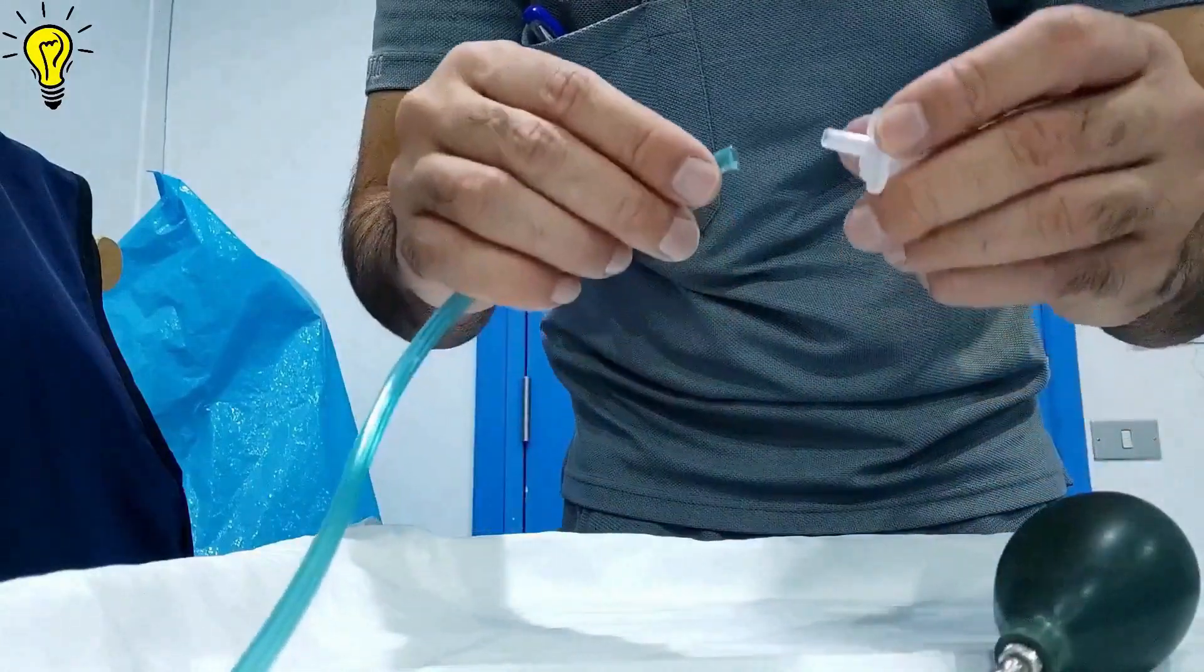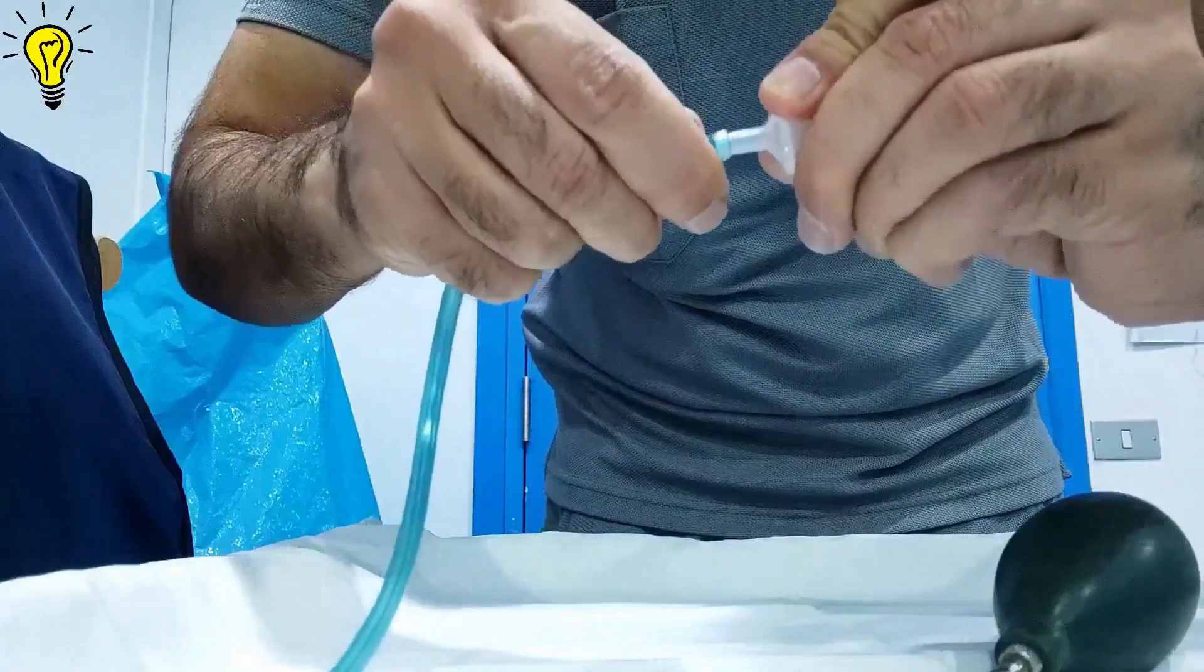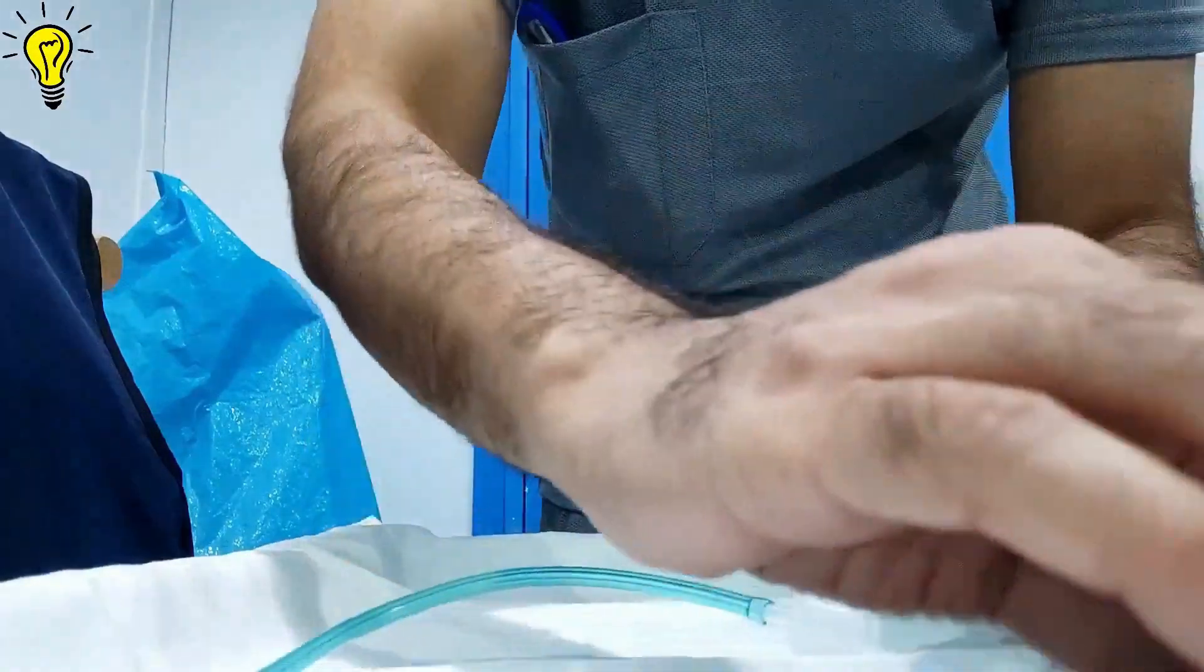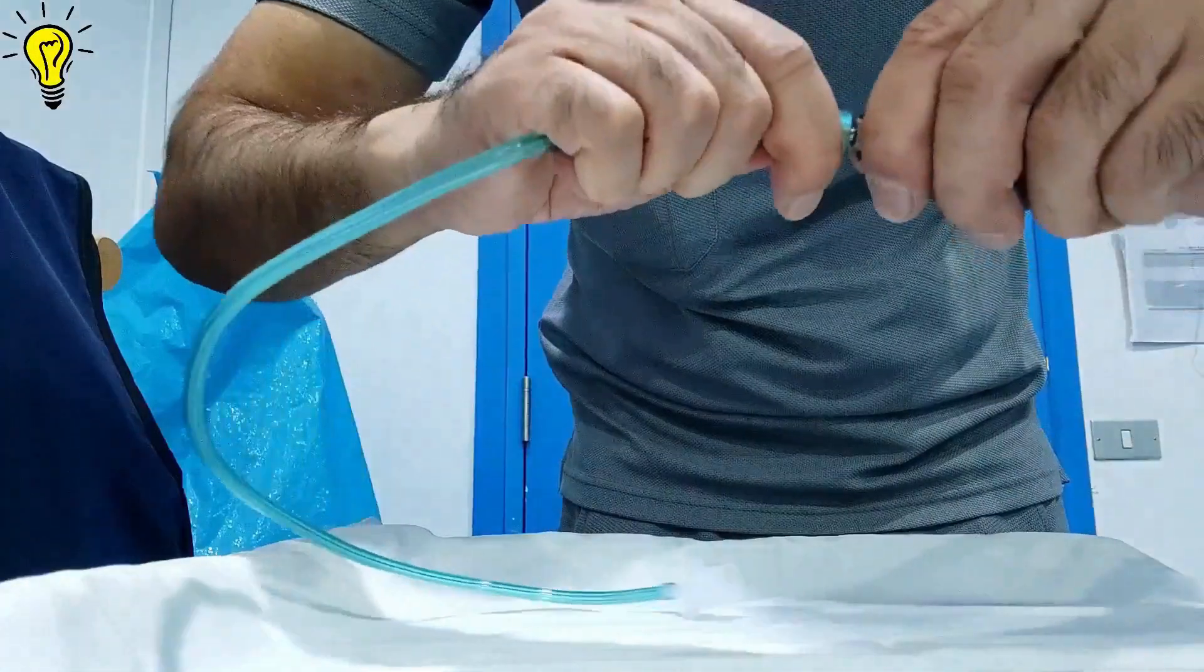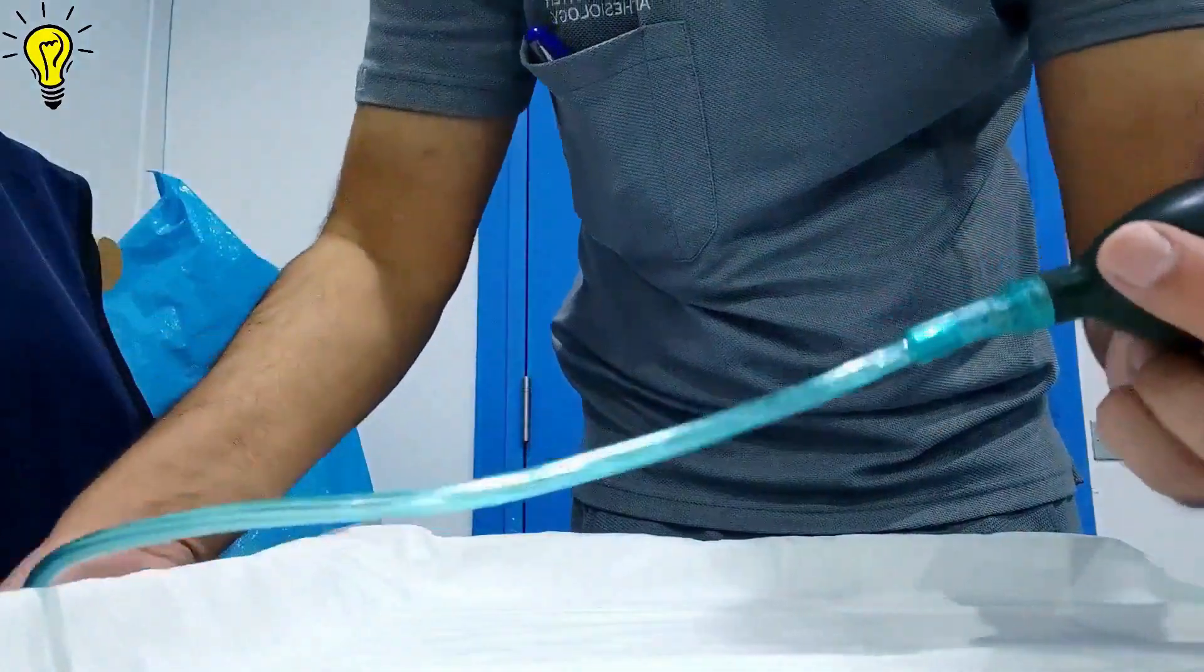Now insert the connector into the oxygen line on one end. Plug the other end of oxygen line to the nozzle in cuff and we have a working suction bulb now.